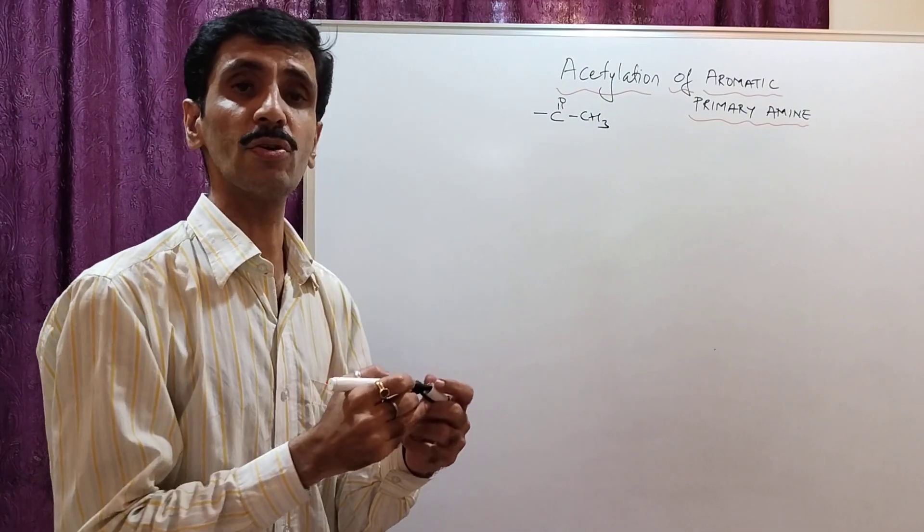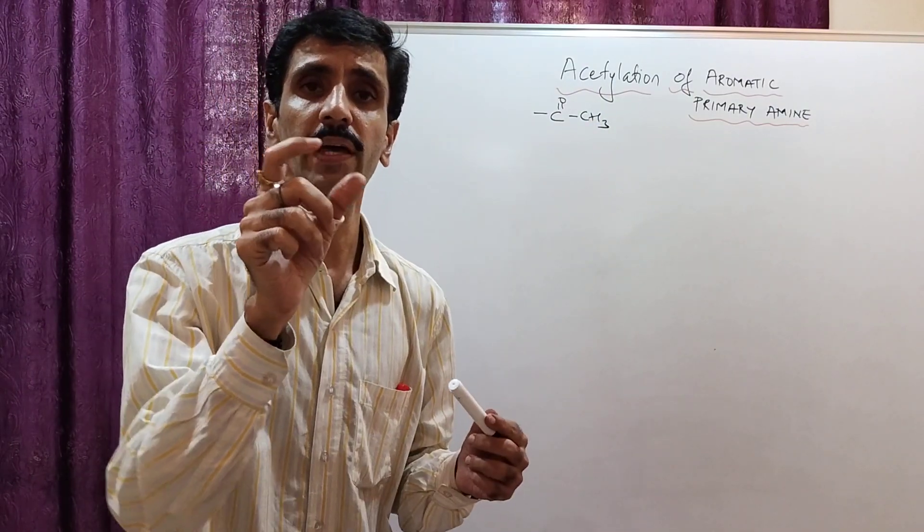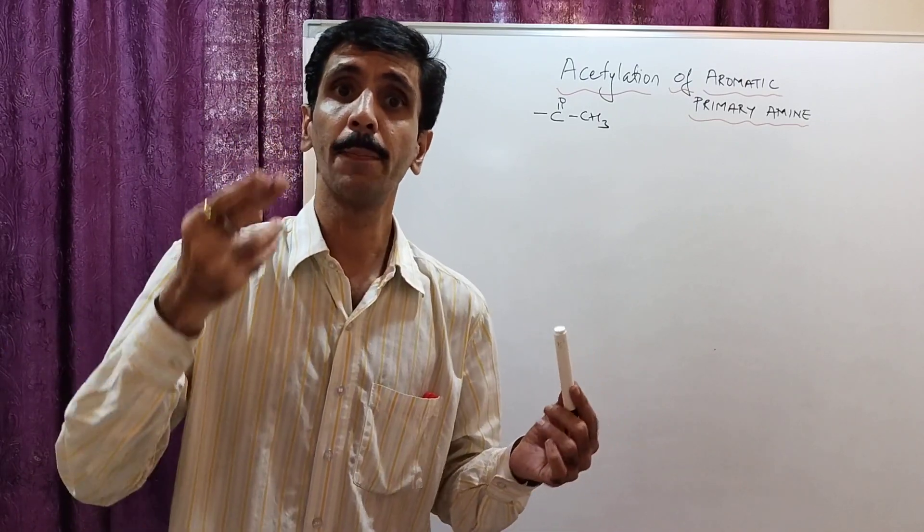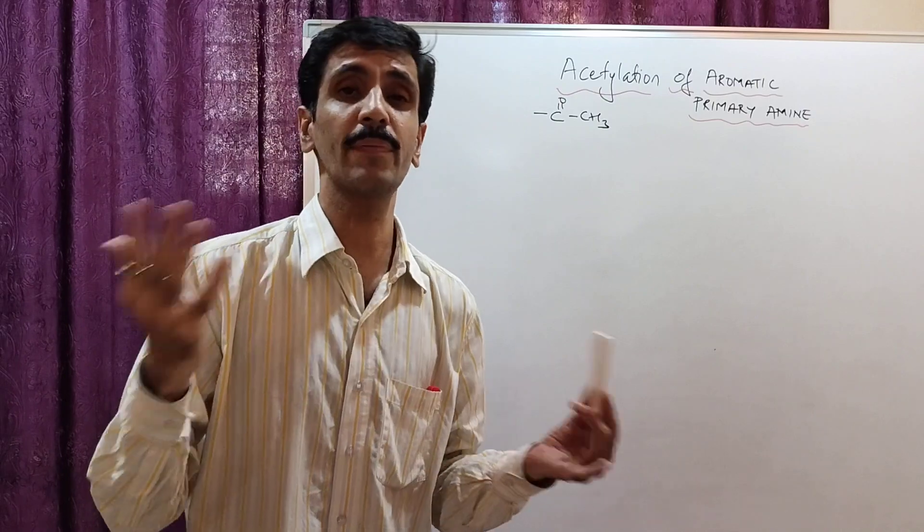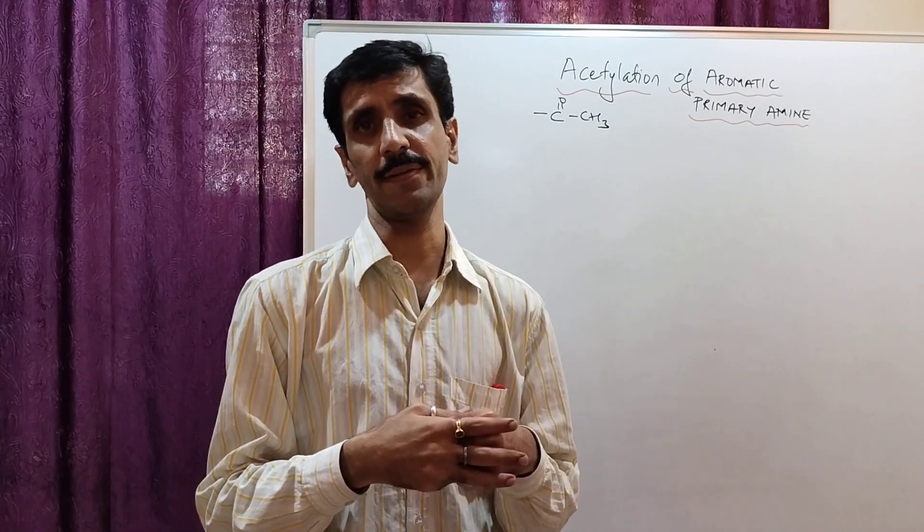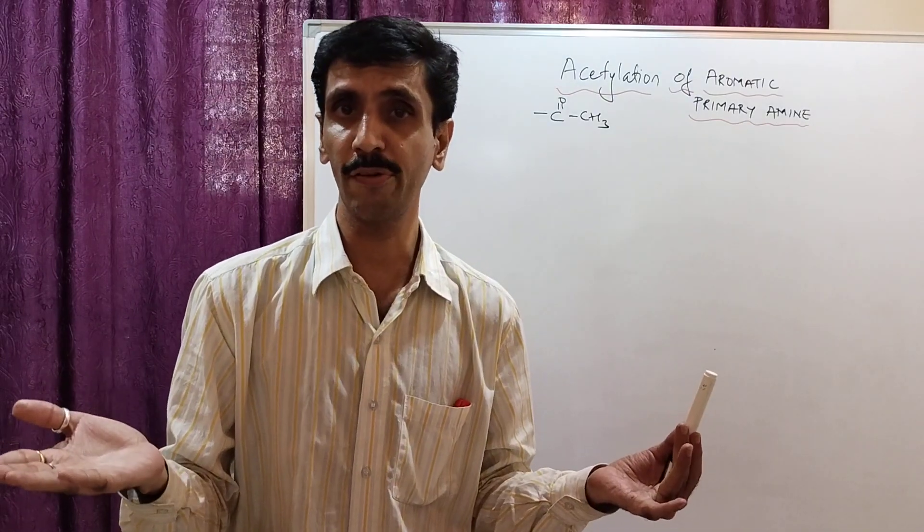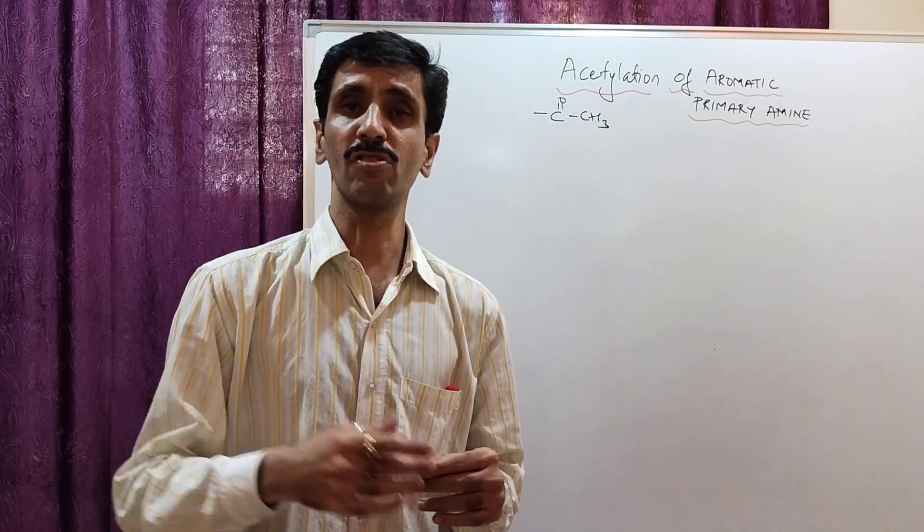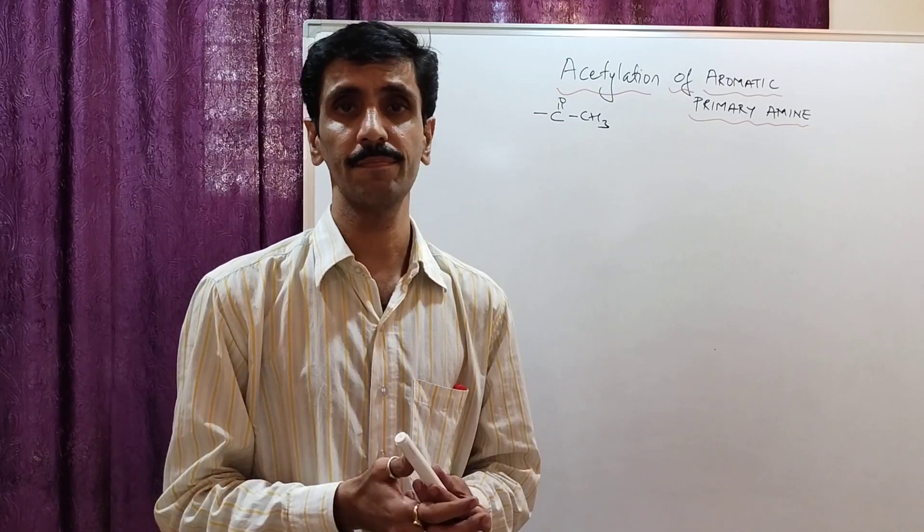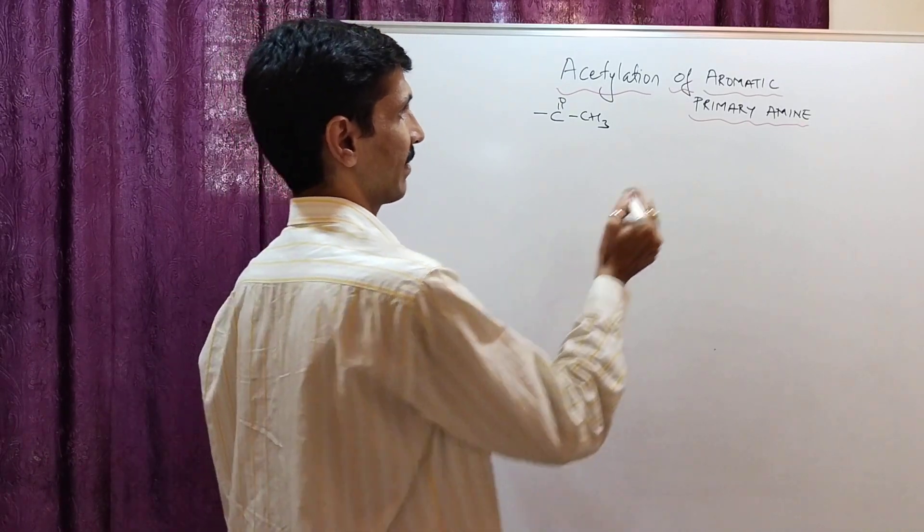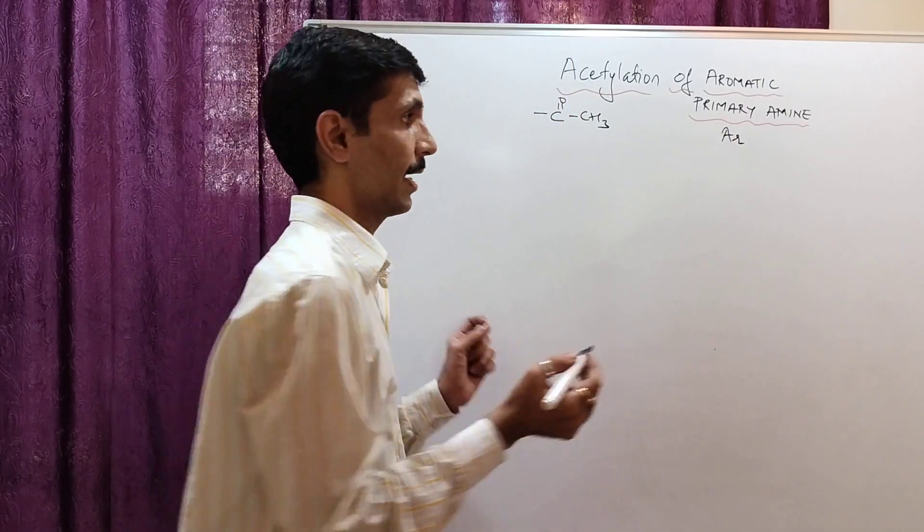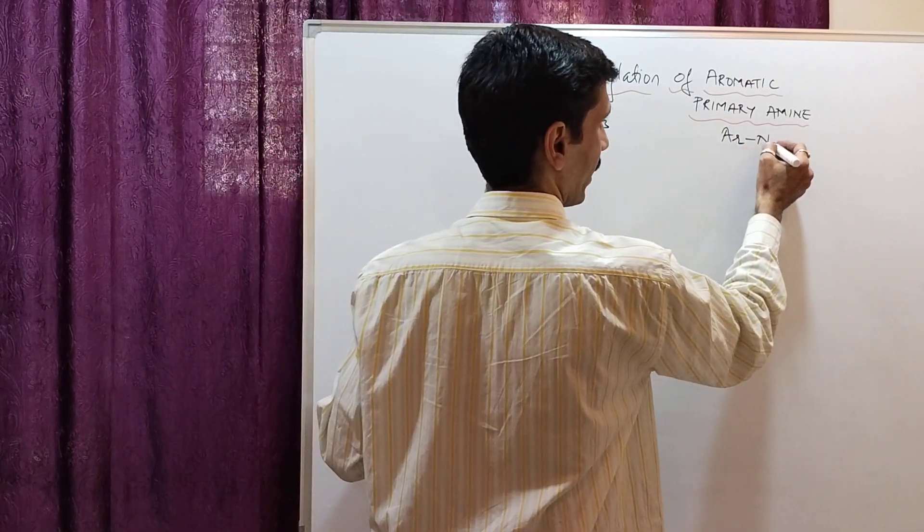Now we are going to introduce this group into an aromatic, meaning having a benzene ring, primary amine. Now what is a primary amine? Amines are derivatives of ammonia. Ammonia, you know the formula is NH3. So the replacement of 1H from ammonia gives you a primary amine. The general formula is Ar NH2, which stands for aromatic primary amine.